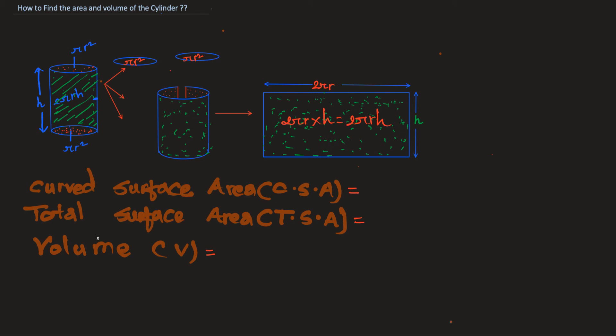In this video, I am going to show you how to calculate the area and volume of the cylinder. Let us first talk about curved surface area. The curved surface area of a cylinder is made up of the surface you can see in the green area, and it consists of two circles — one on the bottom and one on the top.